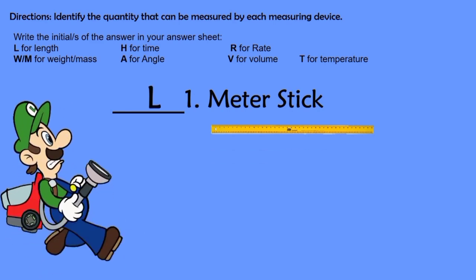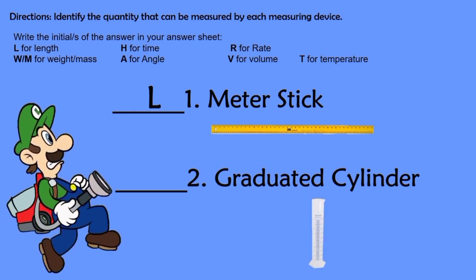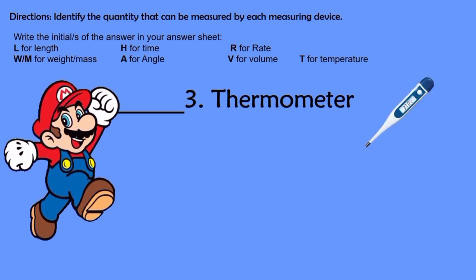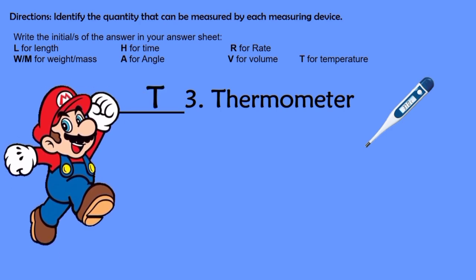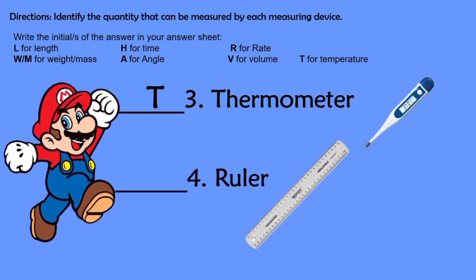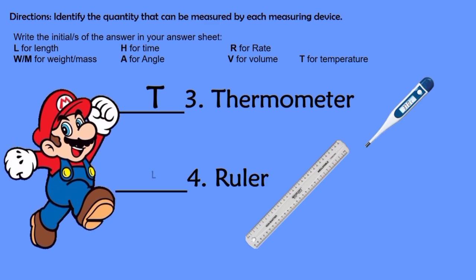Let's proceed to number 2 — Graduated cylinder. Correct! Volume. Now for number 3, we have thermometer. Our answer is temperature. For number 4, we have ruler. The answer is length.